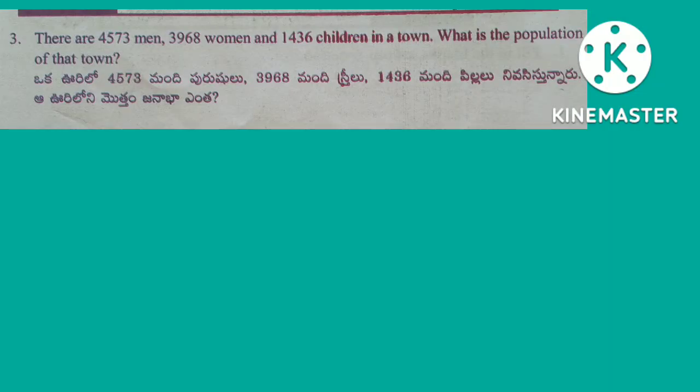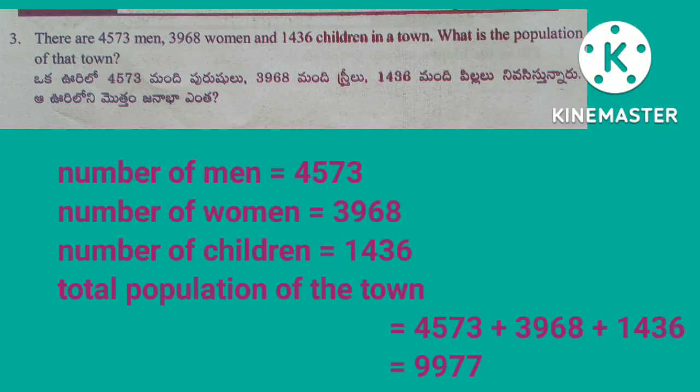Problem 3: There are 4,573 men, 3,968 women and 1,436 children in a town. What is the population of that town?